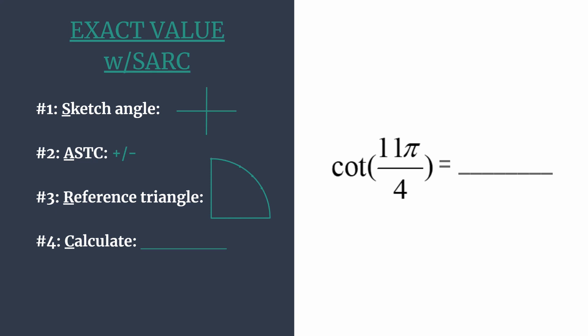2 pi is a full rotation in radians, so let's subtract that from 11 pi over 4. We'll write 2 pi as 8 pi over 4 so that we have a common denominator. We can see that 3 pi over 4 is coterminal to 11 pi over 4. So if we sketch the terminal side of 3 pi over 4, we'll have it for what we're actually looking for — that 11 pi over 4.